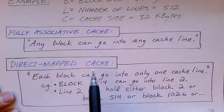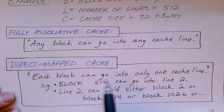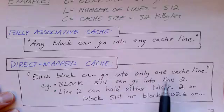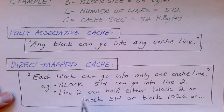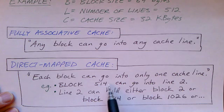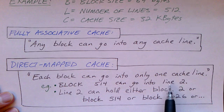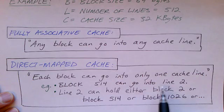With a direct map cache, each block can only go into one particular cache line. So, a given block, for example, block number 514, can only go into line two. It can't be stored in any other line.